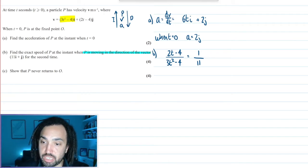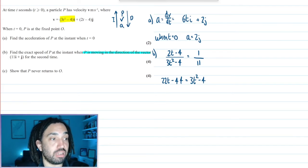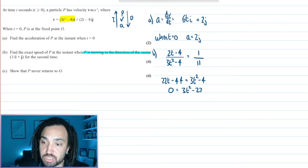So we can cross multiply here to get 22t minus 44 is equal to 3t squared minus 4. I can then move everything over to the right-hand side to form a quadratic.